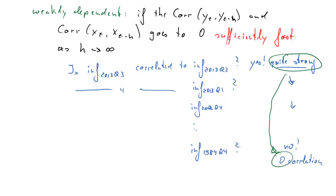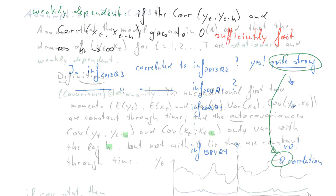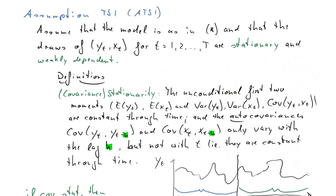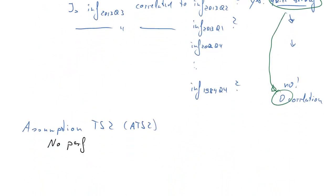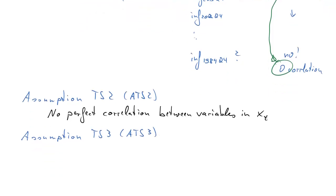How to know whether it's sufficiently fast or not, that's not for this course to discuss. These definitions help to explain the meaning behind assumption TS1, ATS1. So let's continue with the second assumption required for time series data. We need to assume that there's no perfect correlation between the variables in the vector XT. We had to assume that previously as well. That's not new. The third assumption, which one is this?